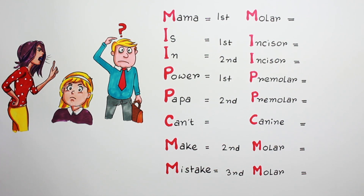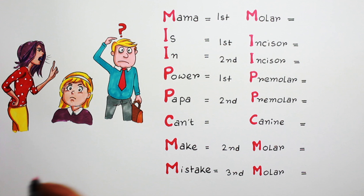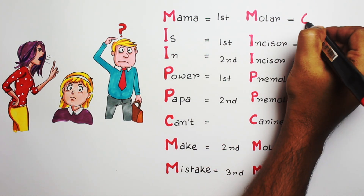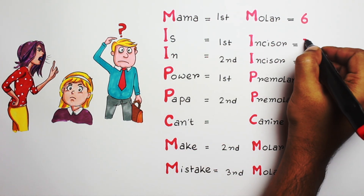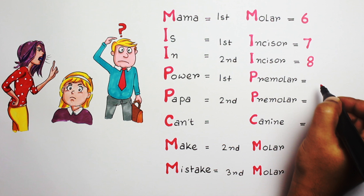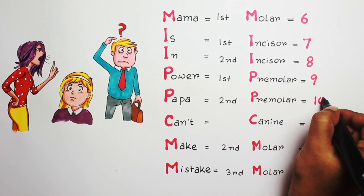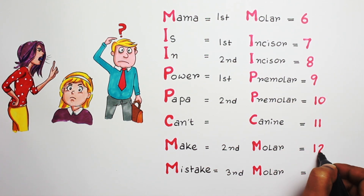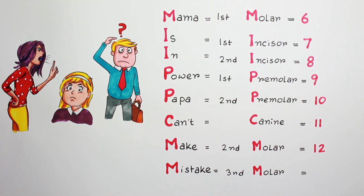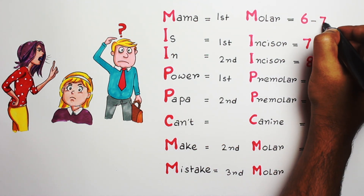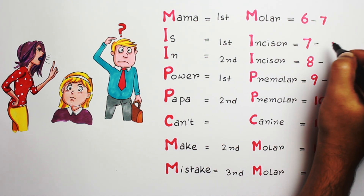Eruption time: the first permanent tooth to erupt in the oral cavity is the first permanent molar at the age of six years. So write down the number, then count up to 12 — like 7, 8, 9, 10, 11, and 12. Now add one more year to make a range, so the first molar erupts in between 6 to 7 years.